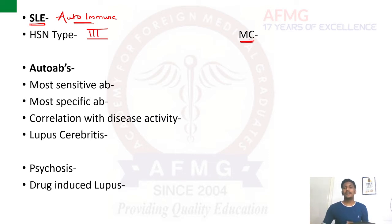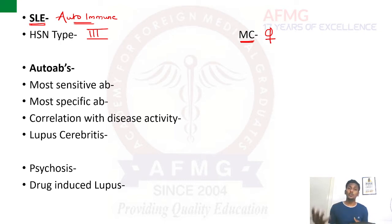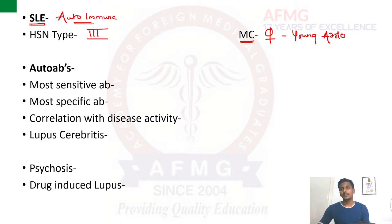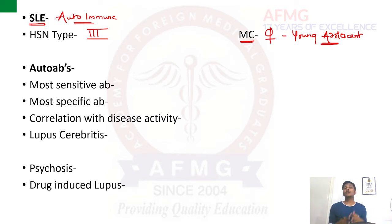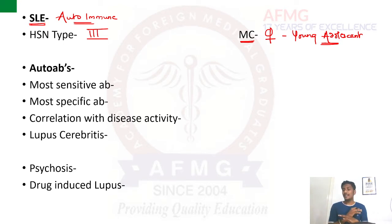SLE is predominantly seen in females. The female to male ratio is almost 9 to 1. Usually young adolescent females are commonly affected with SLE. The patient will present with many systemic manifestations because SLE is a multi-system disorder — it is a rheumatological autoimmune disease but these autoantibodies attack multiple organs, leading to all the systemic manifestations we will discuss today.